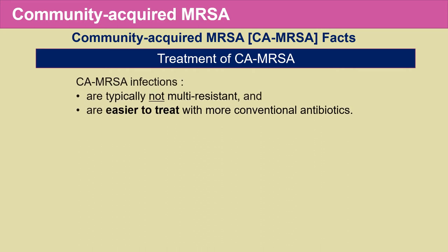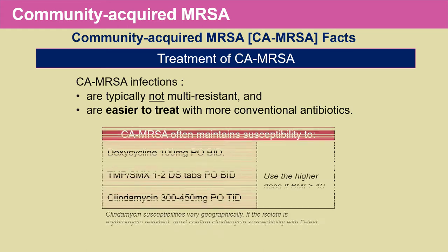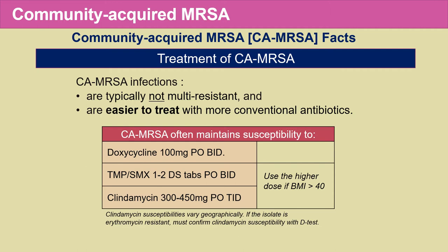Community-acquired MRSA infections are typically not multi-resistant, and they're much easier to treat with more conventional antibiotics compared to hospital MRSA infections. CA-MRSA often maintains susceptibility to doxycycline 100 mg PO twice a day, trimethoprim-sulfamethoxazole (Septra/Bactrim) one to two double-strength tablets twice a day orally, or clindamycin 300 to 450 mg PO three times a day. For trimethoprim-sulfamethoxazole and clindamycin, use the higher dosage if the patient's BMI is greater than 40.